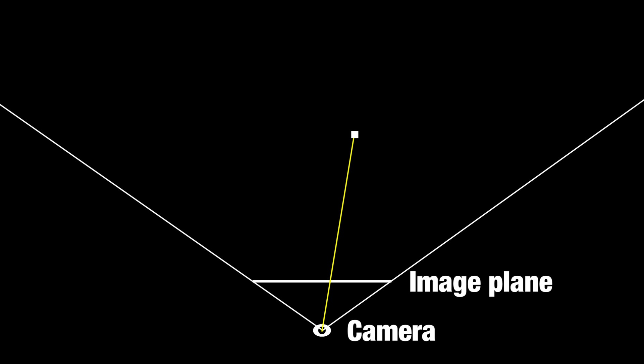Once we've determined the position of the pixel in space, we can shift it left by the same amount that we shifted the camera to the right. Then, we project it back onto the image plane, and that's its position in the new rendered image.